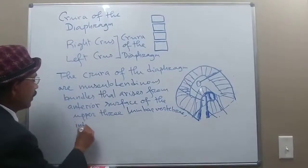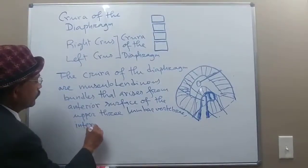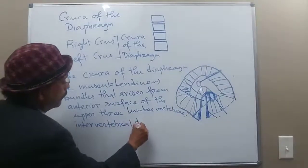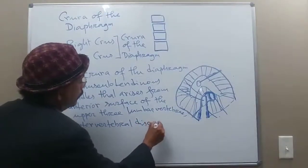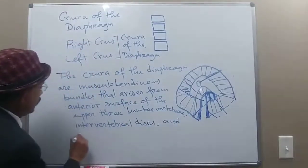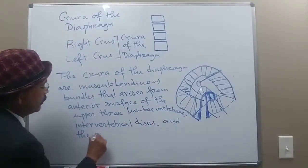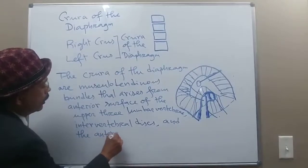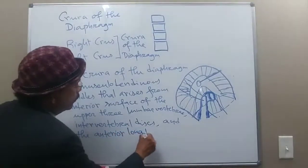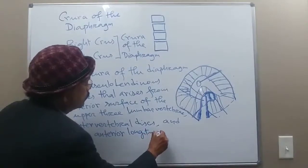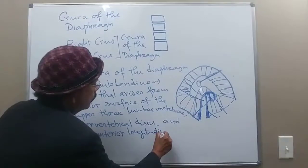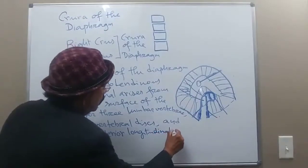The crura also arise from the intervertebral discs and the anterior longitudinal ligament.